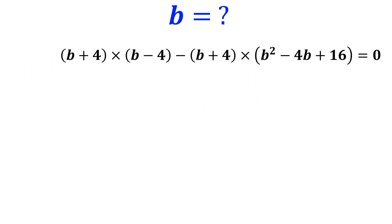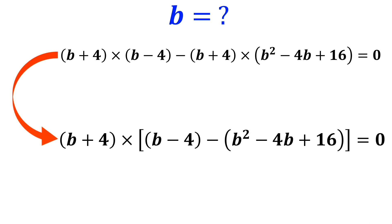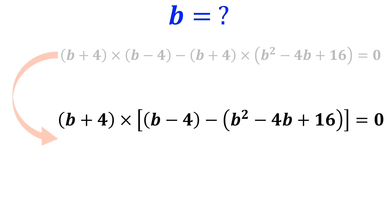We factor out the expression b plus 4, and it becomes b plus 4 times b minus 4 minus b squared minus 4b plus 16, equals 0.